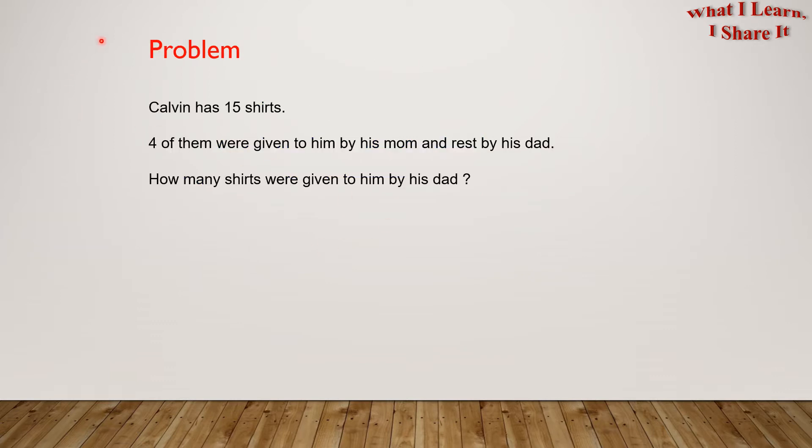Here is a problem to help us understand the strategy. Calvin has 15 shirts. Four of them were given to him by his mom and the rest by his dad. How many shirts were given to him by his dad?